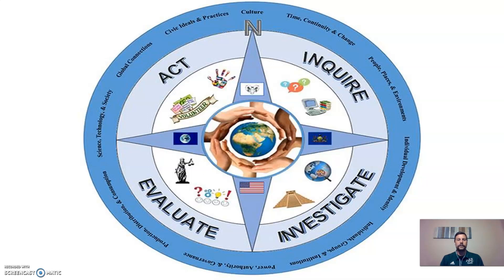What we're looking at here — what you should be looking at — is this particular graphic. What this really has done is tried to give us a way across multiple social studies disciplines to examine the way in which we learn about social studies. So whether it's psychology, economics, U.S. history, world history, European history, or law, all of these courses are able to be viewed through different lenses using this graphic.